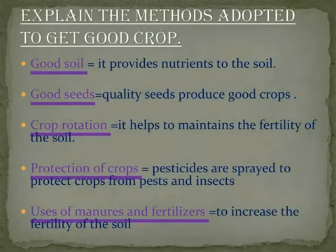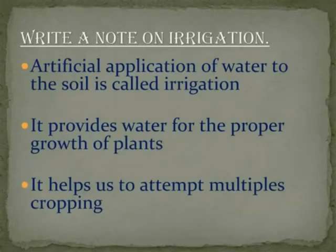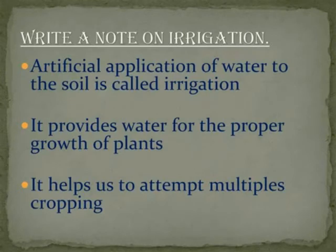A note on irrigation: Artificial application of water into the soil is called irrigation. It provides water for the proper growth of the plants. It helps us to attempt multiple cropping.